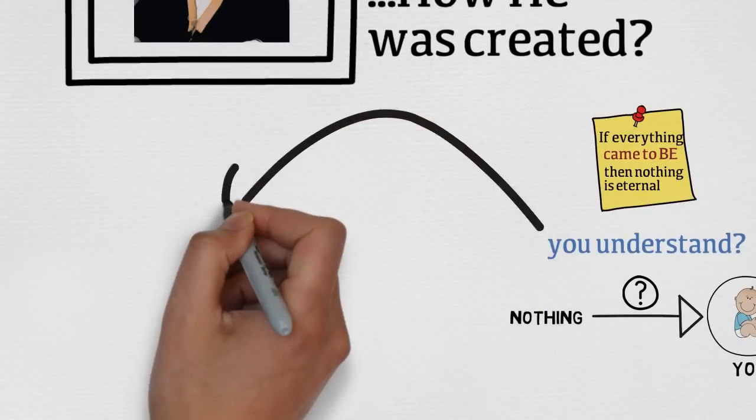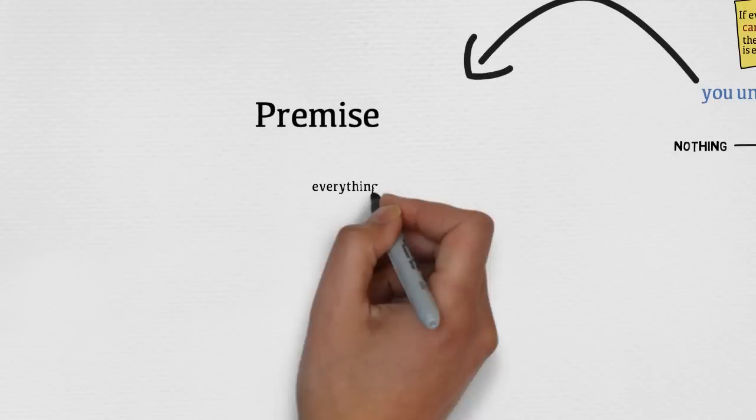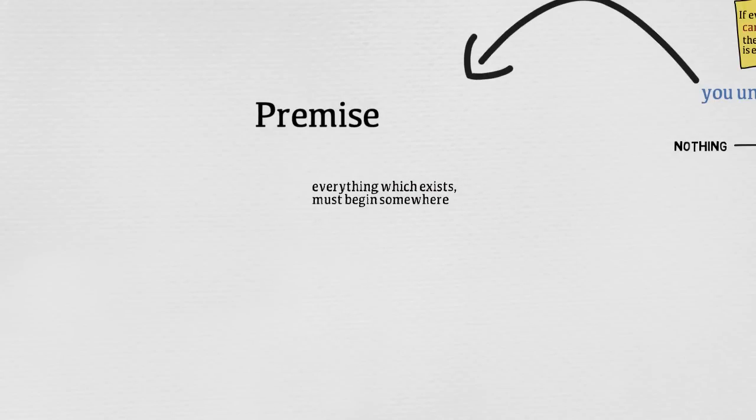Let's start with this premise. If everything has to come to be one day, everything which exists must begin somewhere, then there is no eternity.